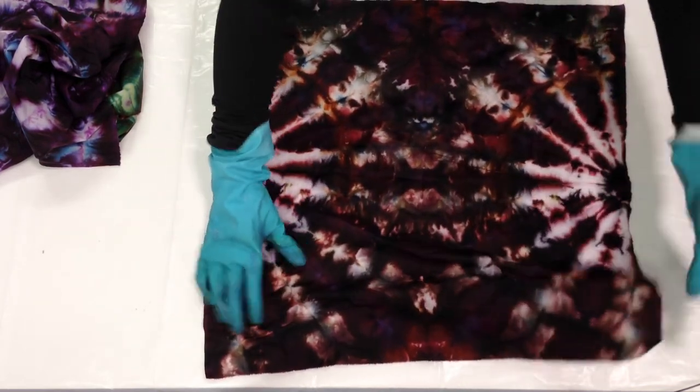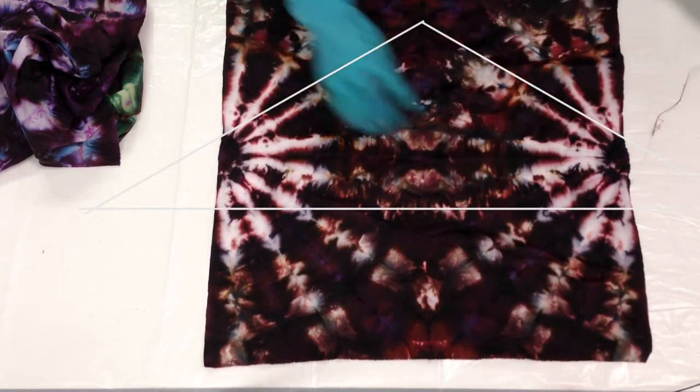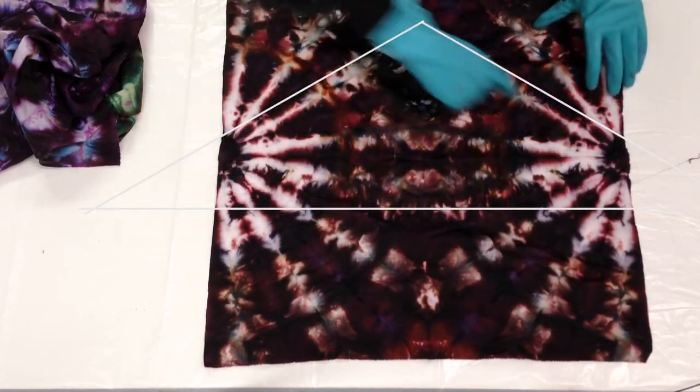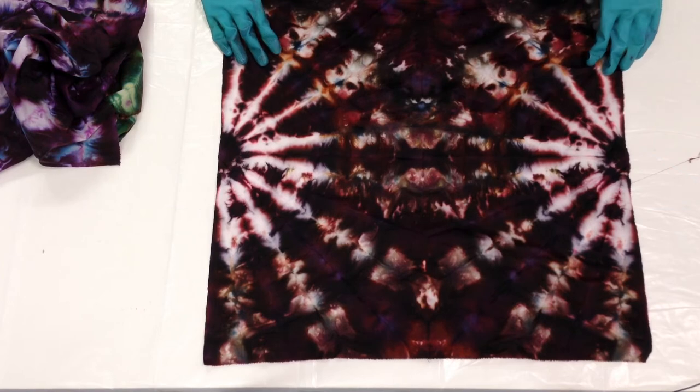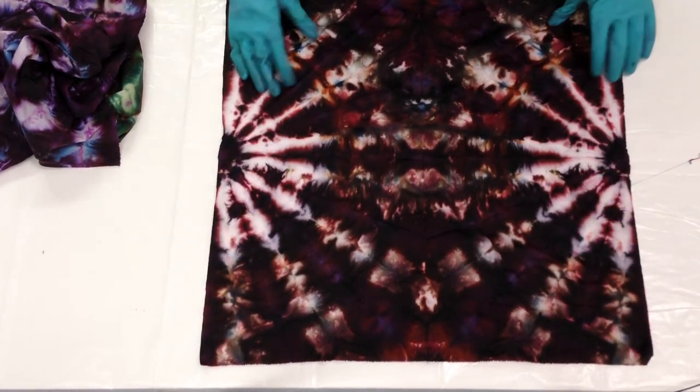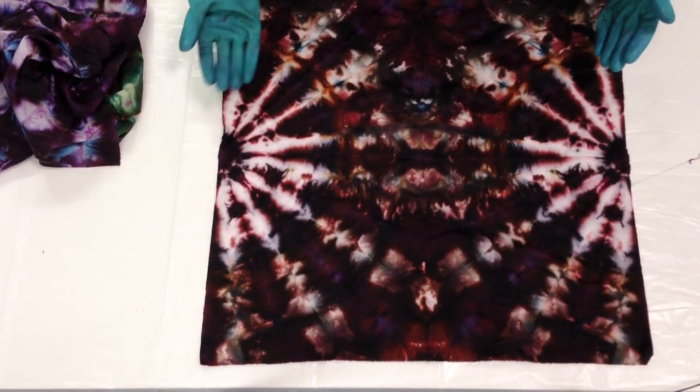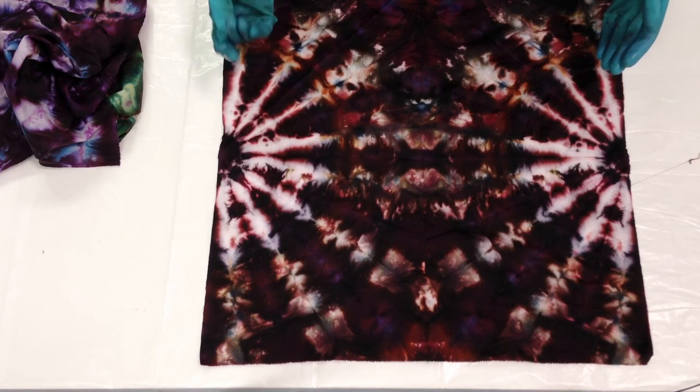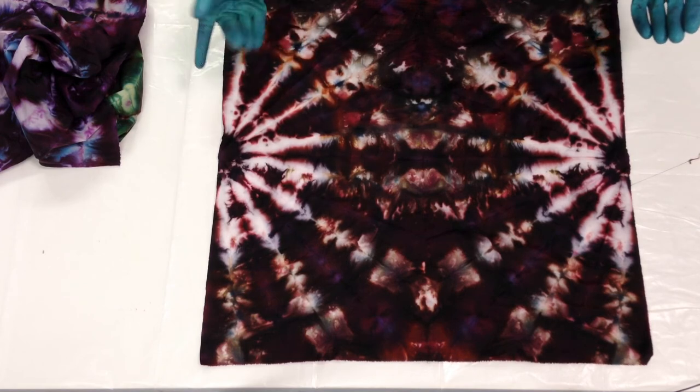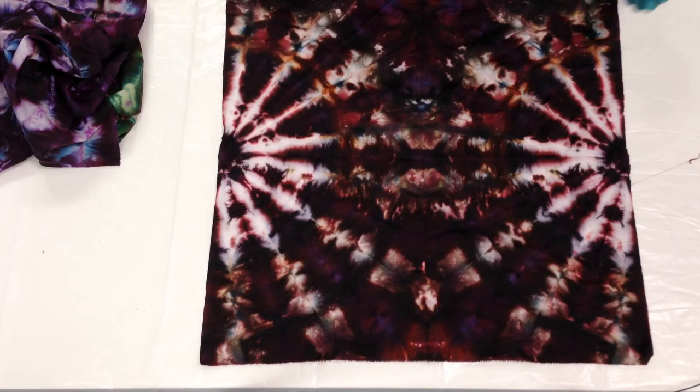And this one's got a nice pyramid shape to it there in the center. So the fabrics look pretty dark right now. A good bit of the dye will rinse out, and then also they'll be lighter just once they're dry. So I'll take care of the rinsing process and get back with you with the final results.